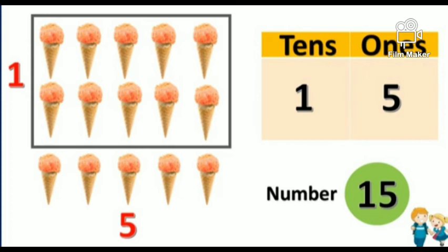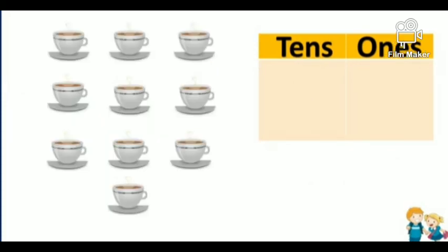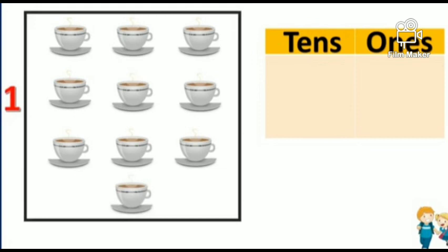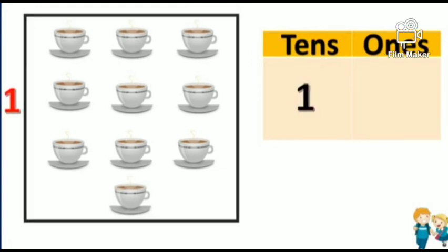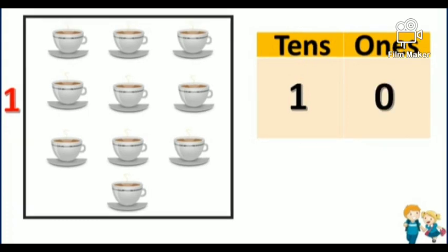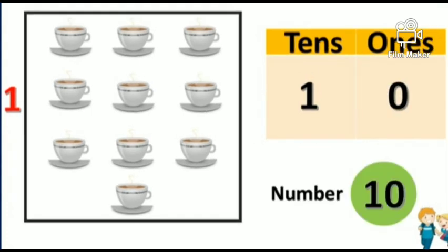Look at the next example. We have some set of teacups given here. Come, let's group them into tens. Let's start counting: one, two, three, four, five, six, seven, eight, nine, ten. So, how many tens do we have? One ten's. In the one's place: zero. So, the number is one-zero: ten.